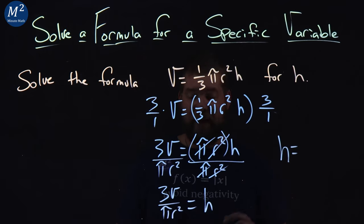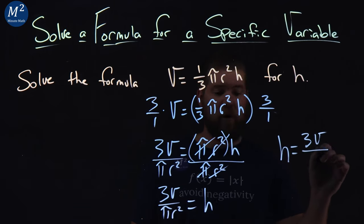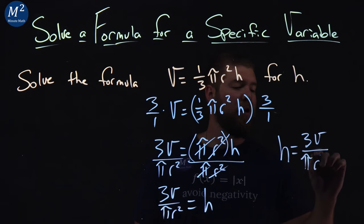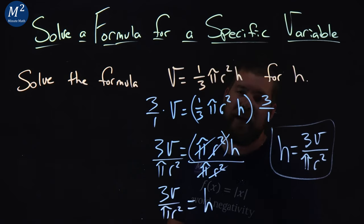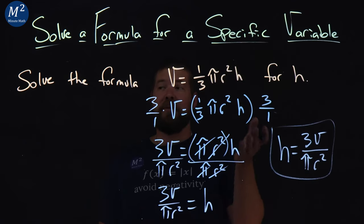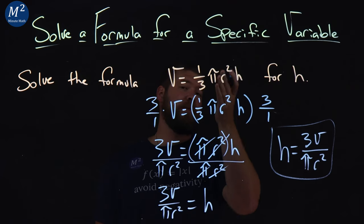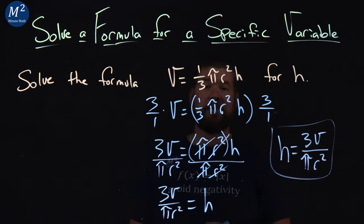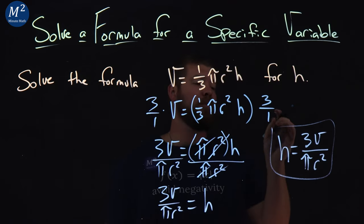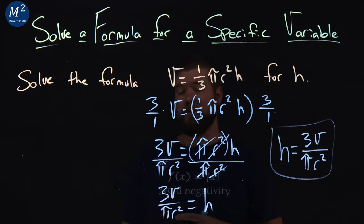So I'm going to rewrite this as h = 3v/(πr²). And there we have it, we have our answer. We've solved this formula, v = ⅓πr²h, for h, and we got h equal to 3v over πr².